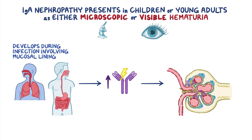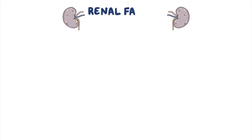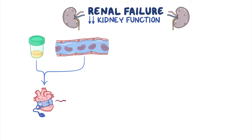With each mucosal infection, the glomeruli undergo more injury. So over time, sometimes decades, individuals may progress to renal failure. Renal failure means decreased kidney function, which may cause less formation of urine and buildup of excess water in the circulation. This leads to high blood pressure, which can damage other organs like the brain and heart.